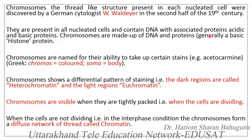Two types of proteins are present in chromosomes, having acidic and basic nature. And in the majority of cases, the basic protein — that is, histone — is present.